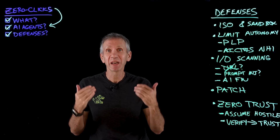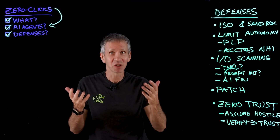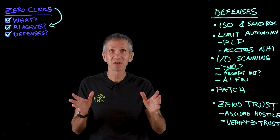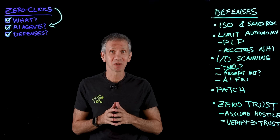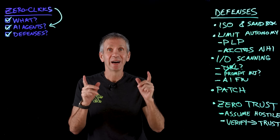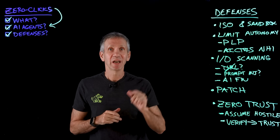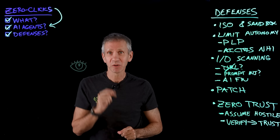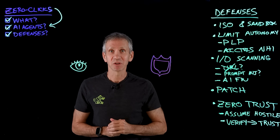Zero-click attacks aren't going away anytime soon, and as AI agents become more autonomous, the attack surface is exploding. The best defense: assume anything that touches an LLM — text, code, URLs — can be malicious. Wrap it in policy, isolate it from critical tools, and constantly audit for abuse. Your call to action: watch your inputs and guard your outputs.